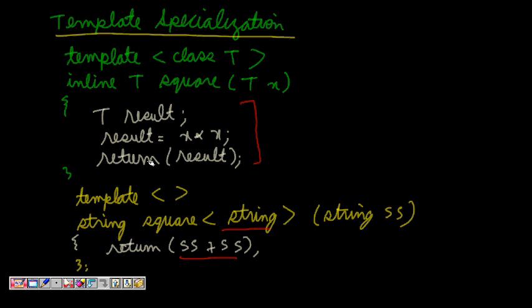For template specialization, you have to remember: I don't give a class T or typename T. In square<string>, I define which type I am taking. So here it was T in both cases, but now I am defining that it is string type. This is template specialization.